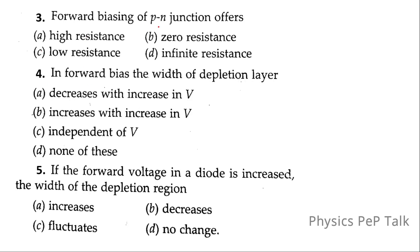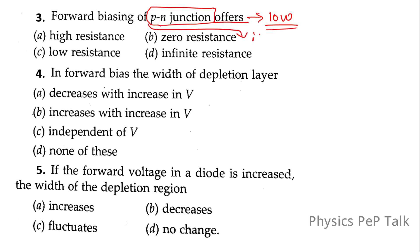Third question: forward biasing of a P-N junction offers — when a P-N junction is forward biased, it offers low resistance. Note: if they had specified an ideal P-N junction, it would offer zero resistance. But since this question says just a P-N junction, the answer is low resistance. If they had given an ideal P-N junction, I would tick zero resistance.